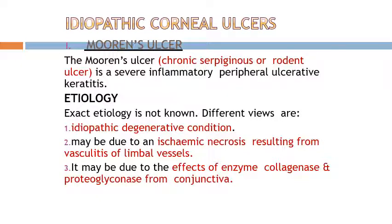In the advanced stage where topical treatment is not working, surgical treatment is considered. The adjacent congested conjunctiva is excised to reduce deposition of immunological components. Supportive measures include bandage contact lens or conjunctival flap over the ulcerative area for impending perforation. Cyanoacrylate glue adhesive can be used for frank perforation, and in the last stage, peripheral tectonic keratoplasty is performed.